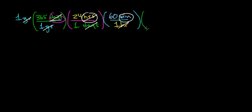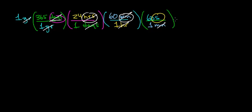Now we multiply by a conversion factor that takes us from units of minutes over to units of seconds. One minute equals 60 seconds, and this unit of minute cancels out with the other unit of minute. The only unit left over is seconds — we've successfully made the conversion between units of years and units of seconds.